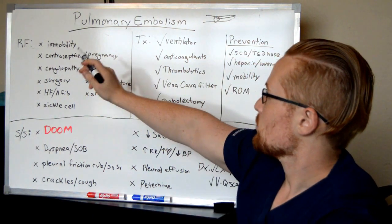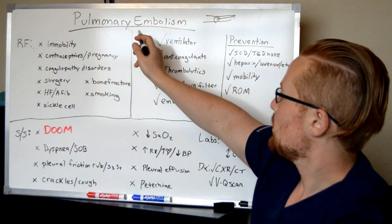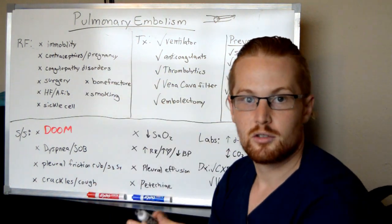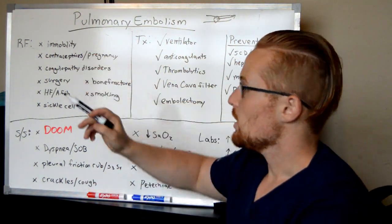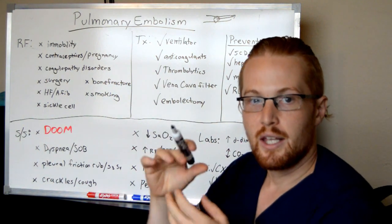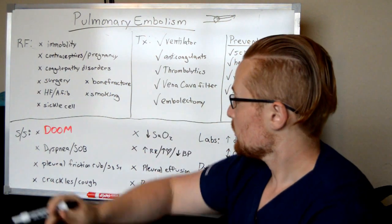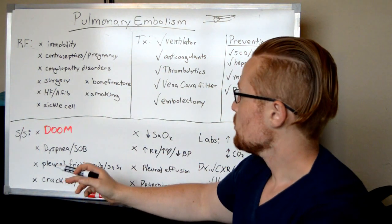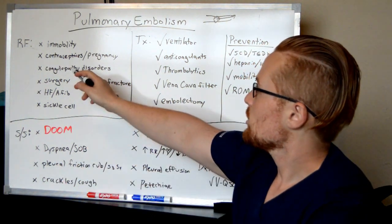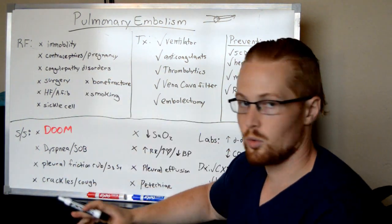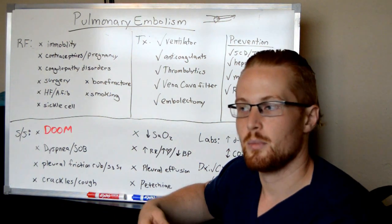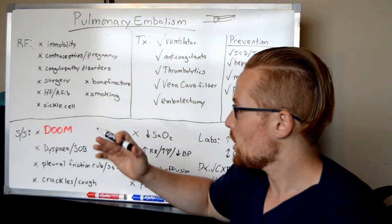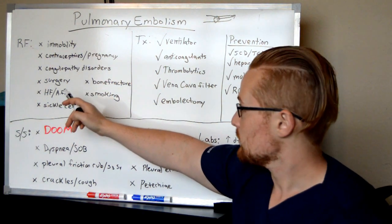What are some risk factors? The risk factors for pulmonary embolism are the same risk factors you'll see for any kind of blood clots. Immobility — when blood is not moving, it clots. Contraceptives and pregnancy, because of the changes in hormones. Some patients have coagulopathy disorders where they may have too many platelets, too many clotting factors, and for some reason have an increased risk for clotting.